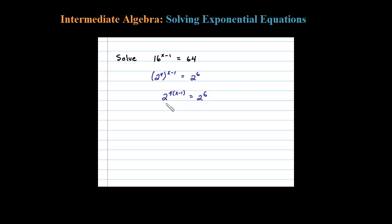When that's the case, you can use the one-to-one property for exponential functions and equate the exponents. So here, the only way this can be true is if the exponents are equal: 4 times (x-1) has to equal 6.